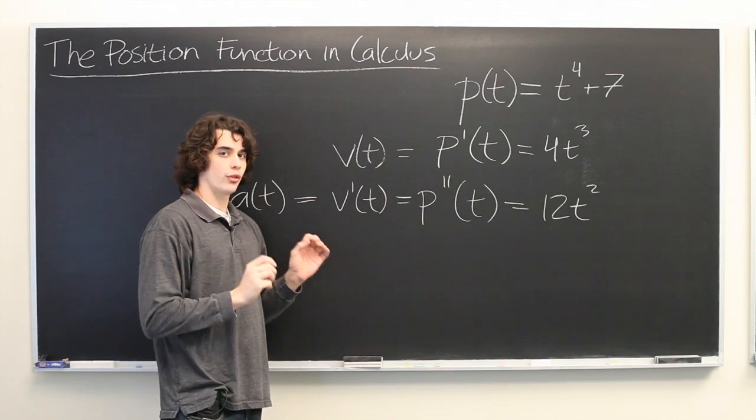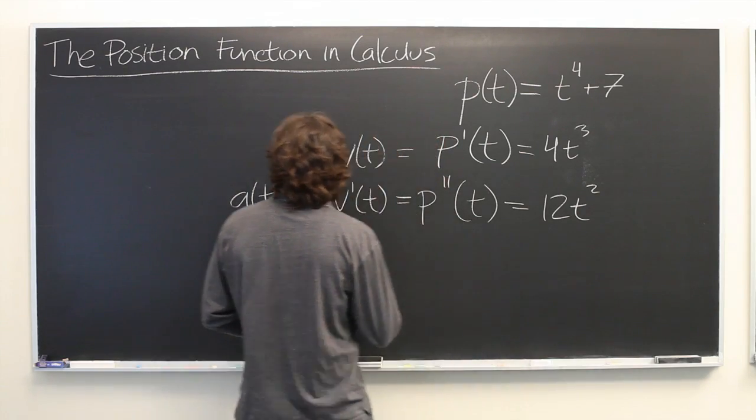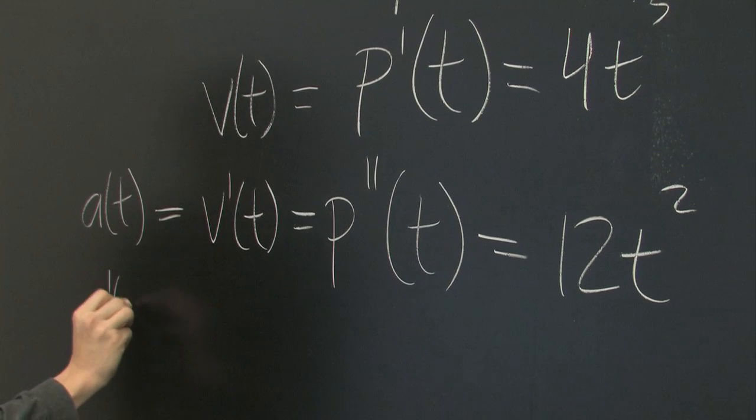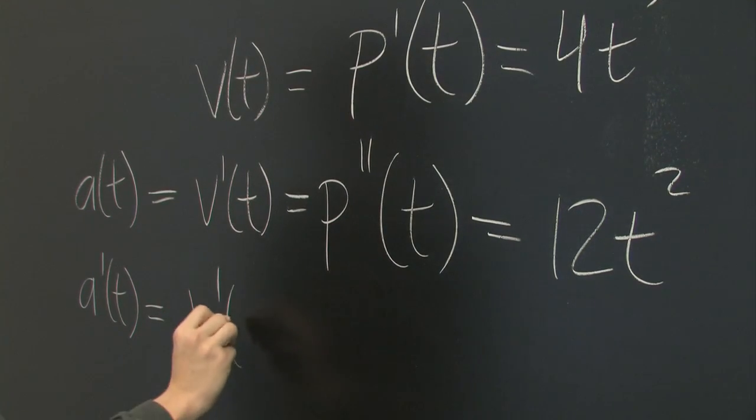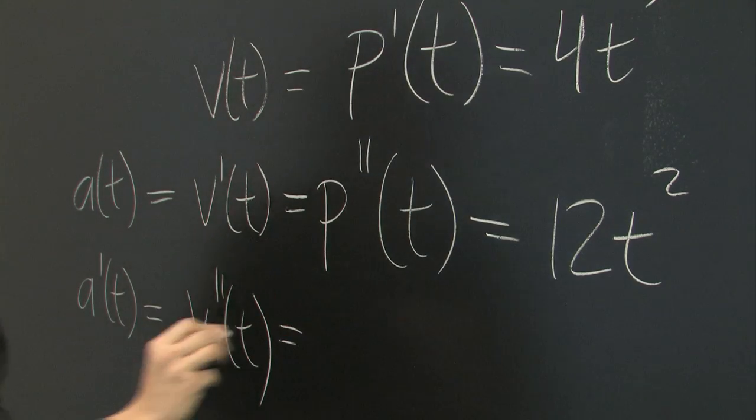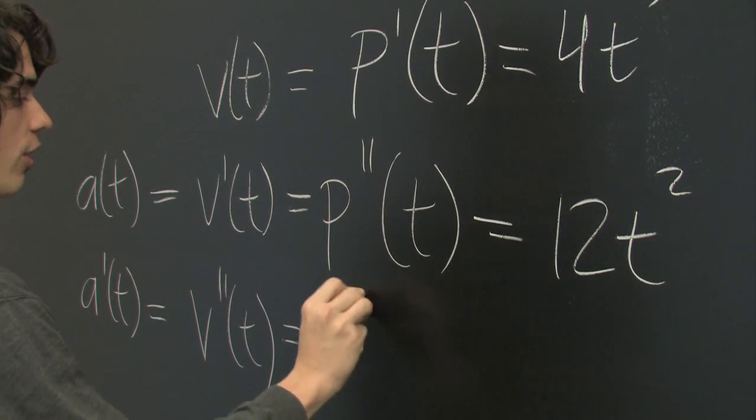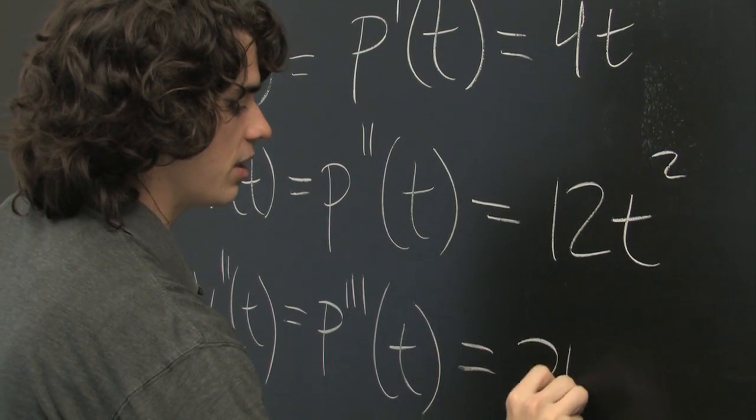You can even take this further if you want to go slightly more abstract. If we take the derivative of the acceleration function or the second derivative of our velocity function or the third derivative of our position function, we get 24 times t.